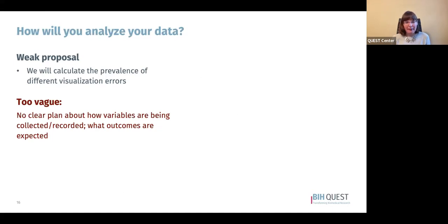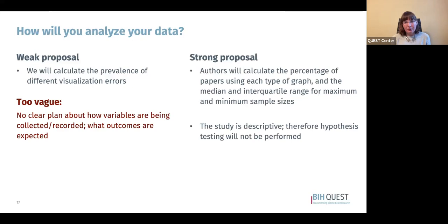You also want to think about how you will analyze your data. A weak proposal might say 'we will calculate the prevalence of different visualization errors' — too vague to know what outcomes to expect. A stronger proposal would specify calculating the percentage of papers using each type of graph and the median and interquartile range for maximum and minimum sample sizes, noting that the study is descriptive and therefore hypothesis testing will not be performed.